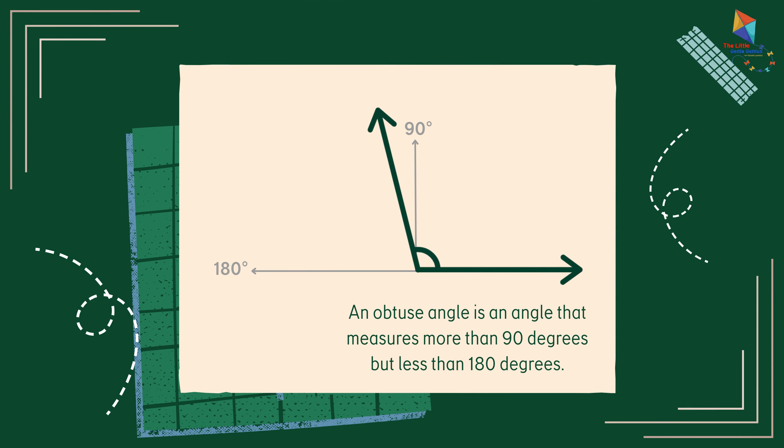An obtuse angle is an angle that measures more than 90 degrees, but less than 180 degrees.